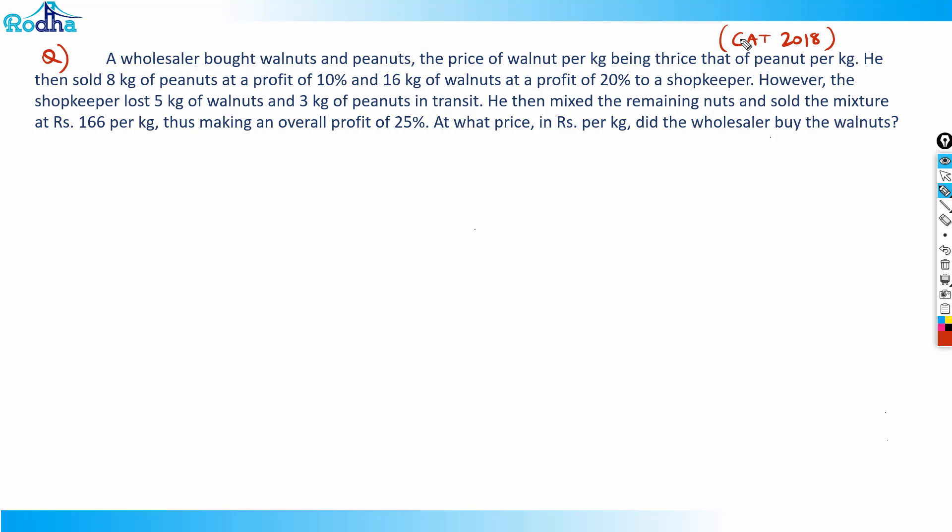Let's solve this question. I'll assume the price of peanuts, since it says the price of walnut is thrice the price of peanut. Assume the price of peanuts is Rs 100x per kg. Then the price of walnuts will be Rs 300x per kg.